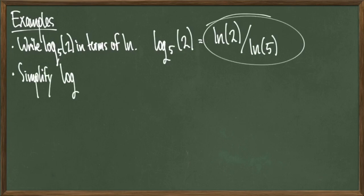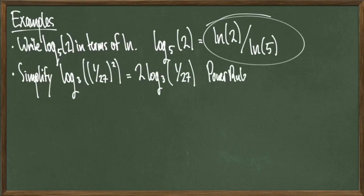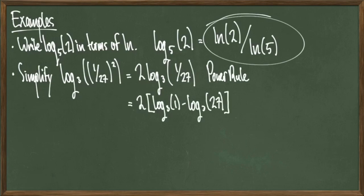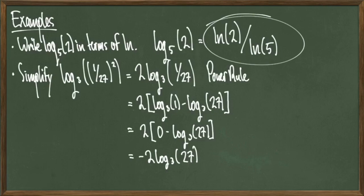For our next example, I'll simplify log base 3 of the quantity 1 over 27 squared. First, I'll use the power rule and bring the power 2 out front to give me 2 times log base 3 of 1 over 27. Then I'll use the quotient rule to expand to get 2 times the quantity log base 3 of 1 minus log base 3 of 27. I recall that log base 3 of 1 is equal to 0, so this simplifies to 2 times 0 minus log base 3 of 27, which simplifies again to negative 2 times log base 3 of 27.